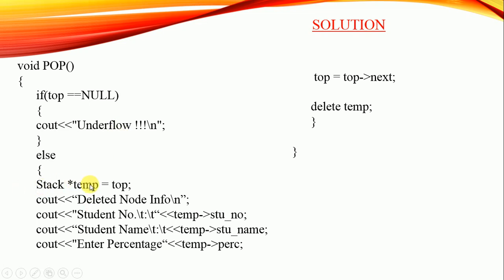In other cases, we create a pointer — stack star temp — which points to the top, the first element. Then we display the information of the deleted node: temp arrow student number, temp arrow student name, temp arrow student percentage. After that, we make top point to the next element: top equals top arrow next. Now that top has shifted, we can safely delete the first element that was referred by temp using delete temp.